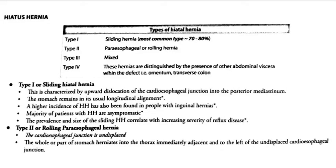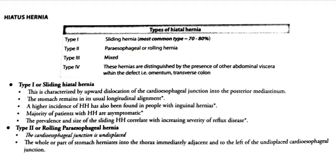Today we are going to study about hiatal hernia. Firstly, the types of hiatal hernia — there are four types. Type 1, which is the most common type accounting for 70 to 80 percent, is the sliding hernia. Type 2 is the rolling hernia, also known as paraesophageal hernia. Type 3 is the mixed type in which both sliding and rolling hernia are present. In type 4, a part of the abdominal viscera — which can be omentum or transverse colon — is present within the defect.